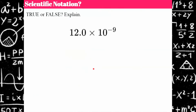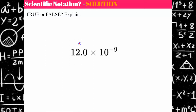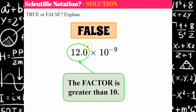Given what we just reviewed, do you think this number is written in scientific notation? True or false — pause, think about it, and come back. Welcome back. Hopefully you came back with false. The factor is greater than 10; it's 12. Since it's greater than 10, this number is not in scientific notation. It still represents a value, but it's not scientific notation.